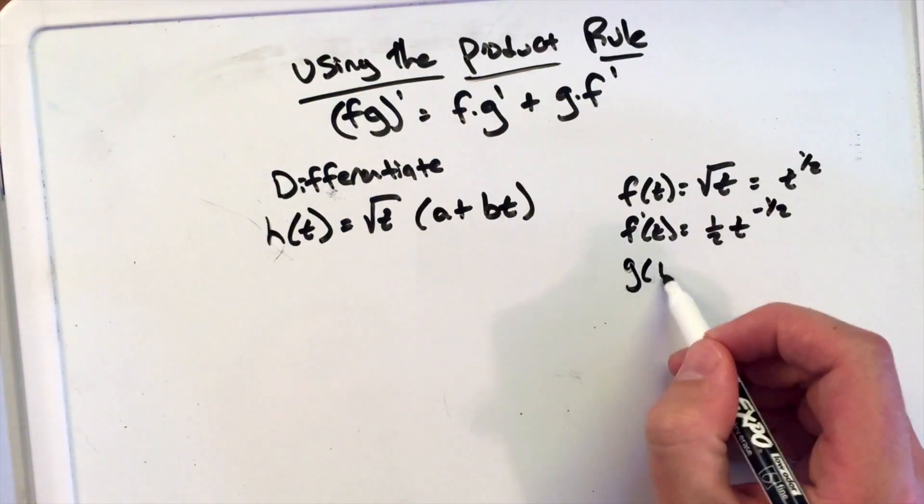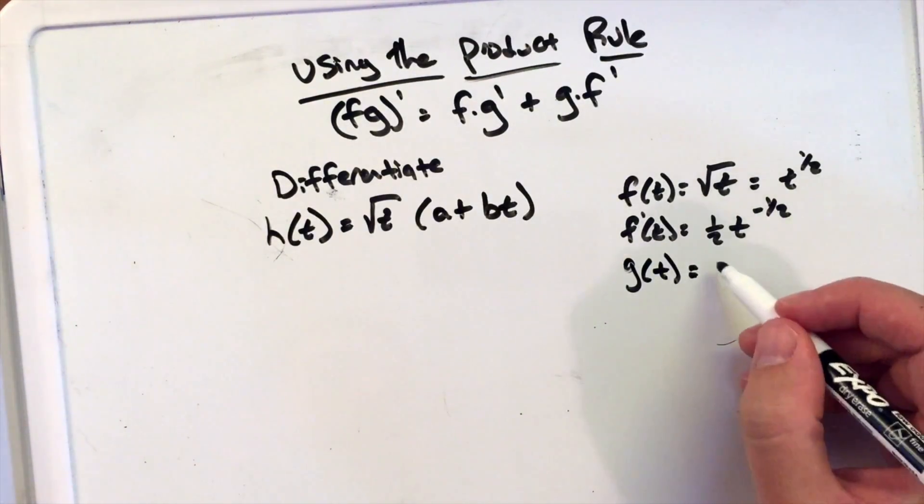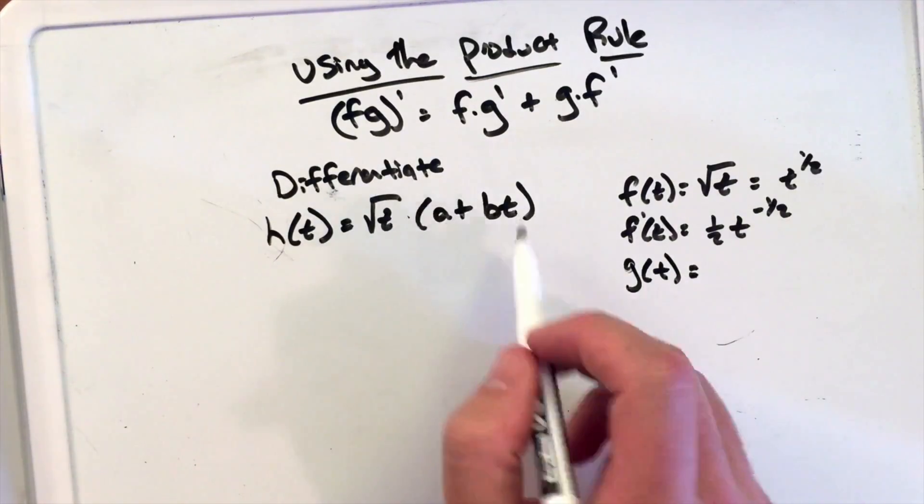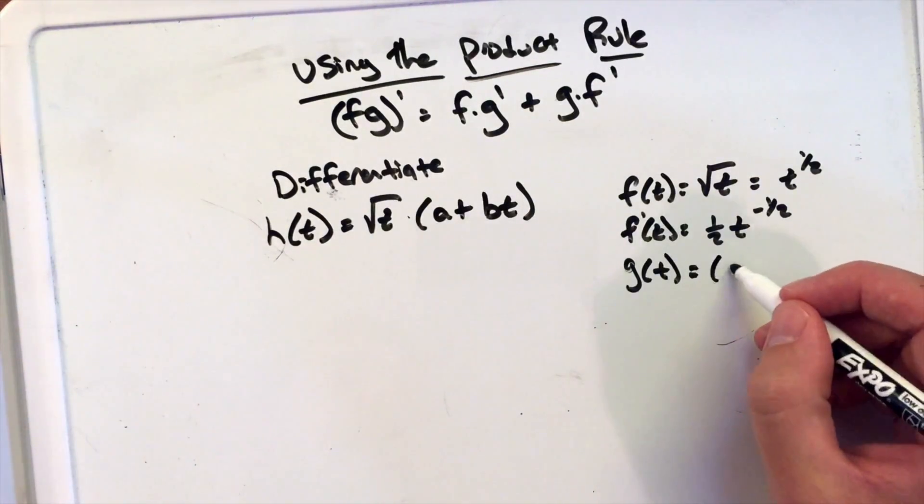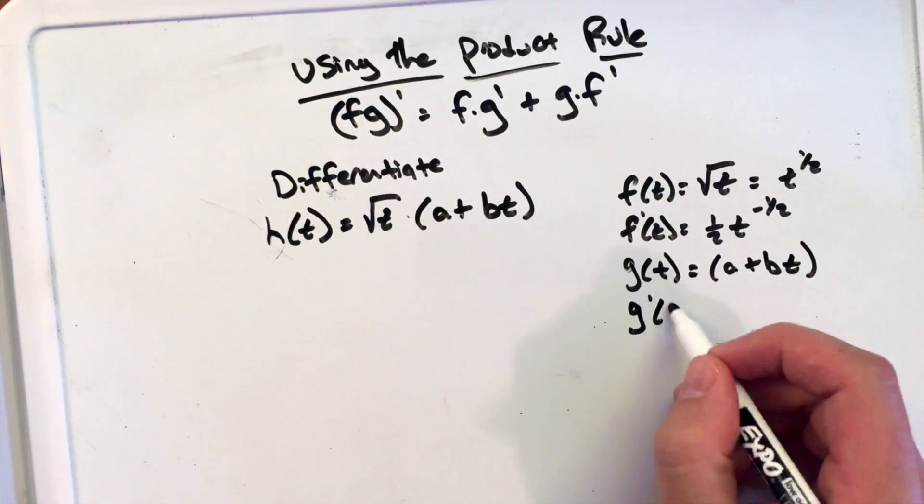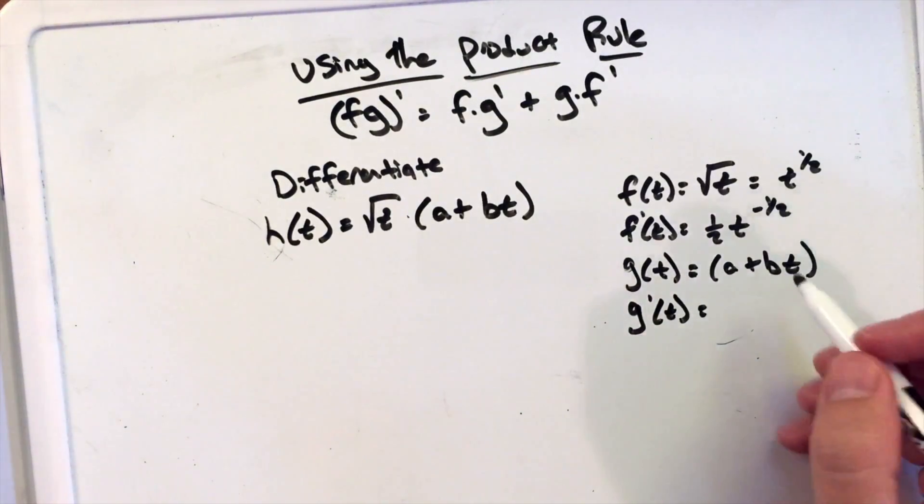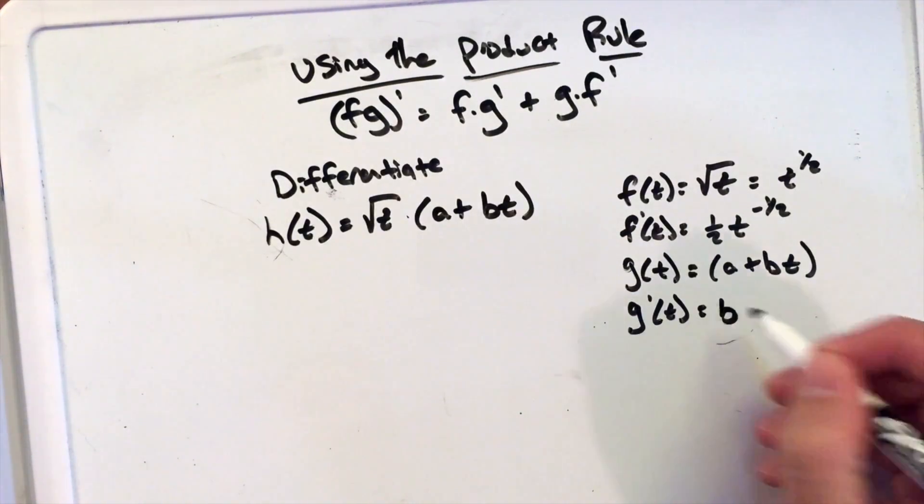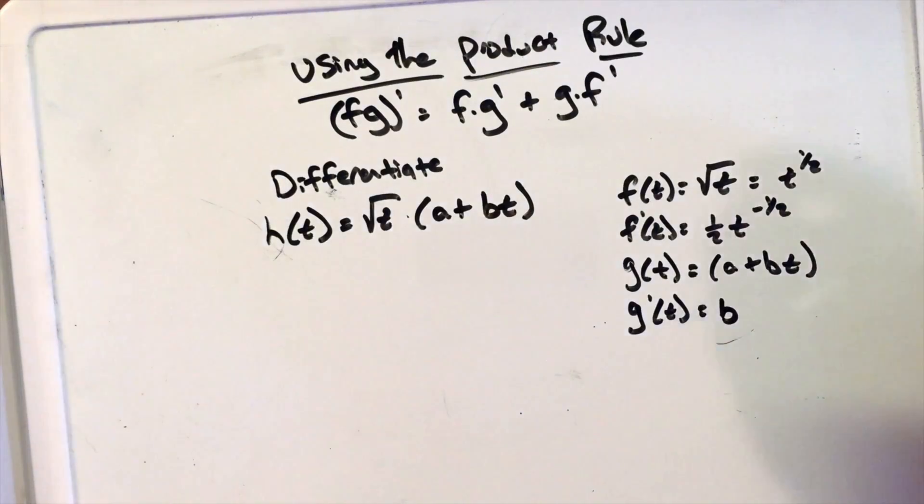If g of t is equal to the second part, I'm going to break it apart into these two parts here, which is our a plus bt. So if I differentiate g prime of t, we're going to have, well, a is a constant, so that disappears, and we have left just b. And that's what g prime of t would equal.